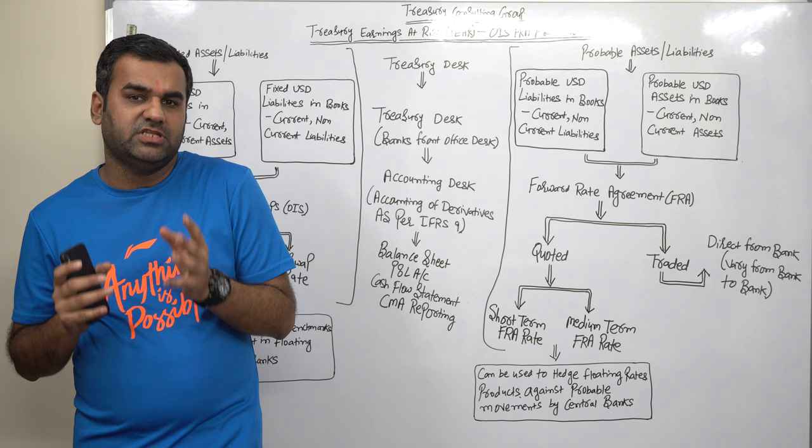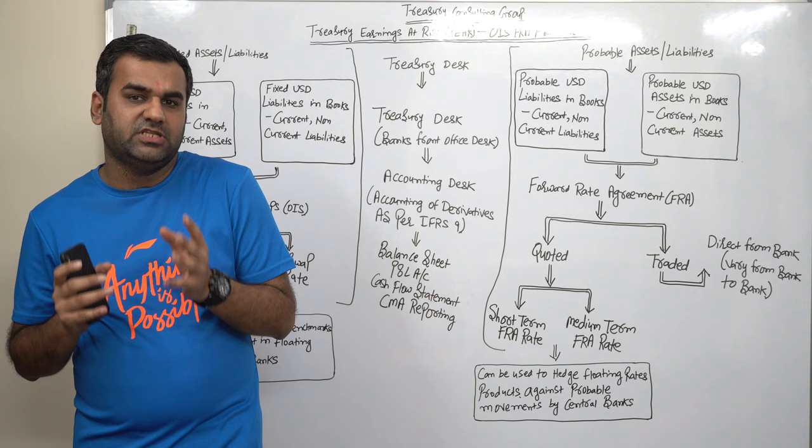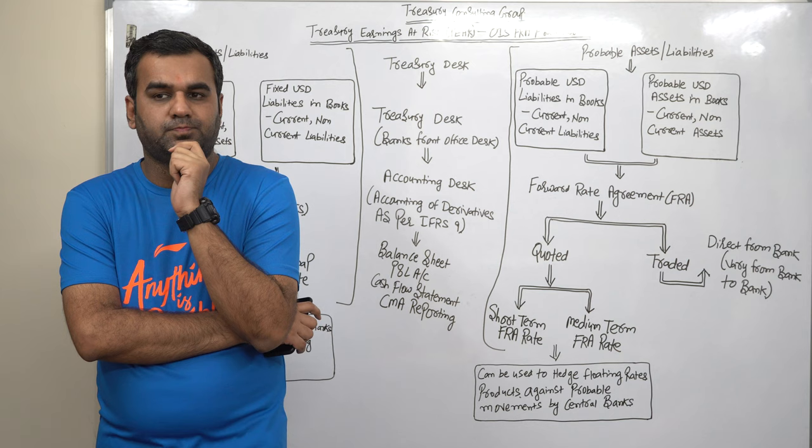Because one of the predominant base for this framework, TEAR, Treasury Earnings at Risk is that, you know, around 90% now, okay, let me give you an example.